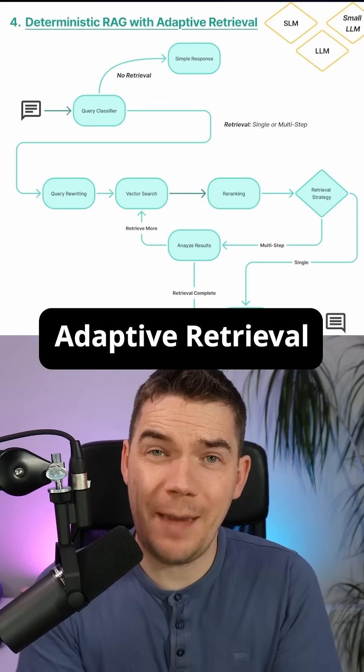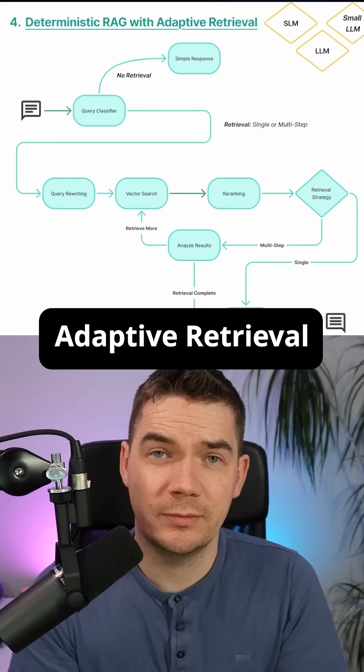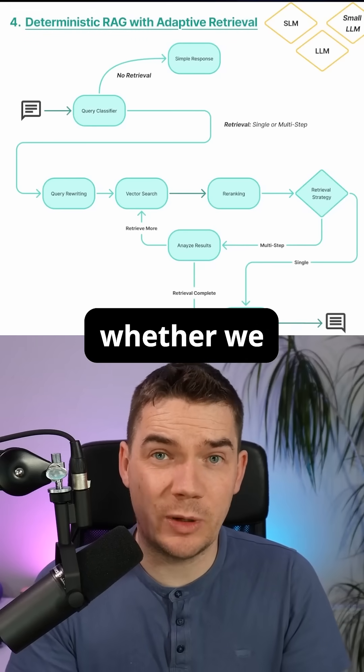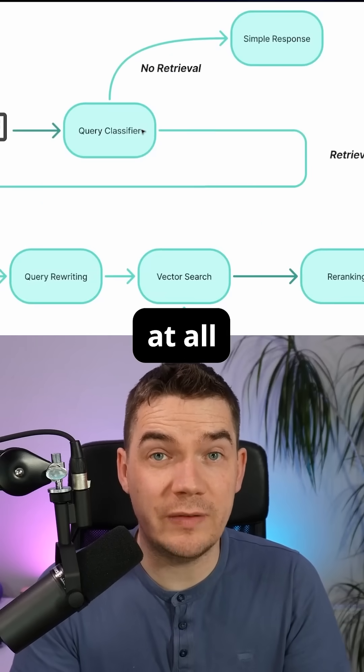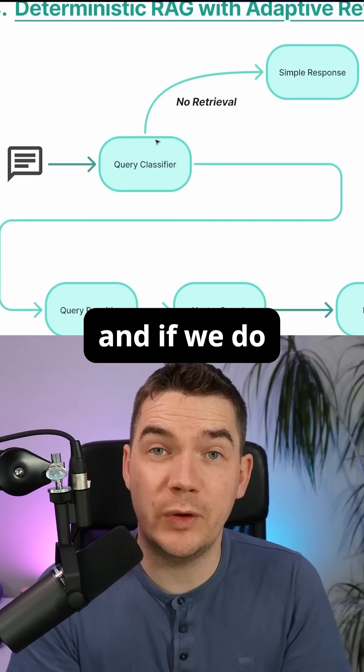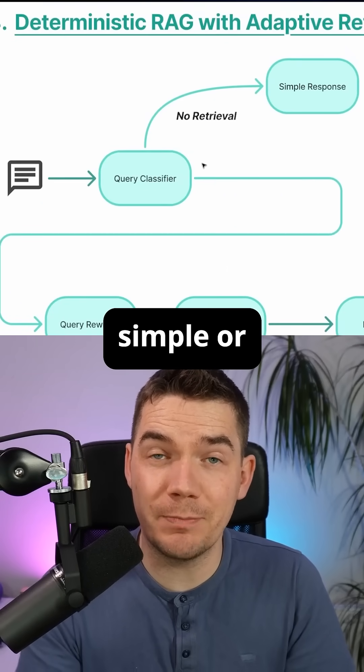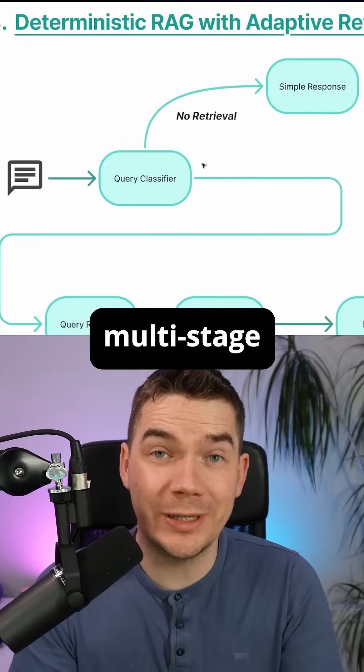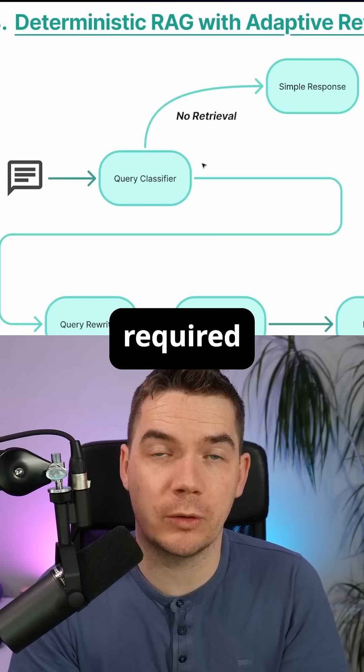Next up is adaptive retrieval. Here we can decide whether we need to retrieve at all, and if we do, is it simple or is a multi-stage retrieval required?